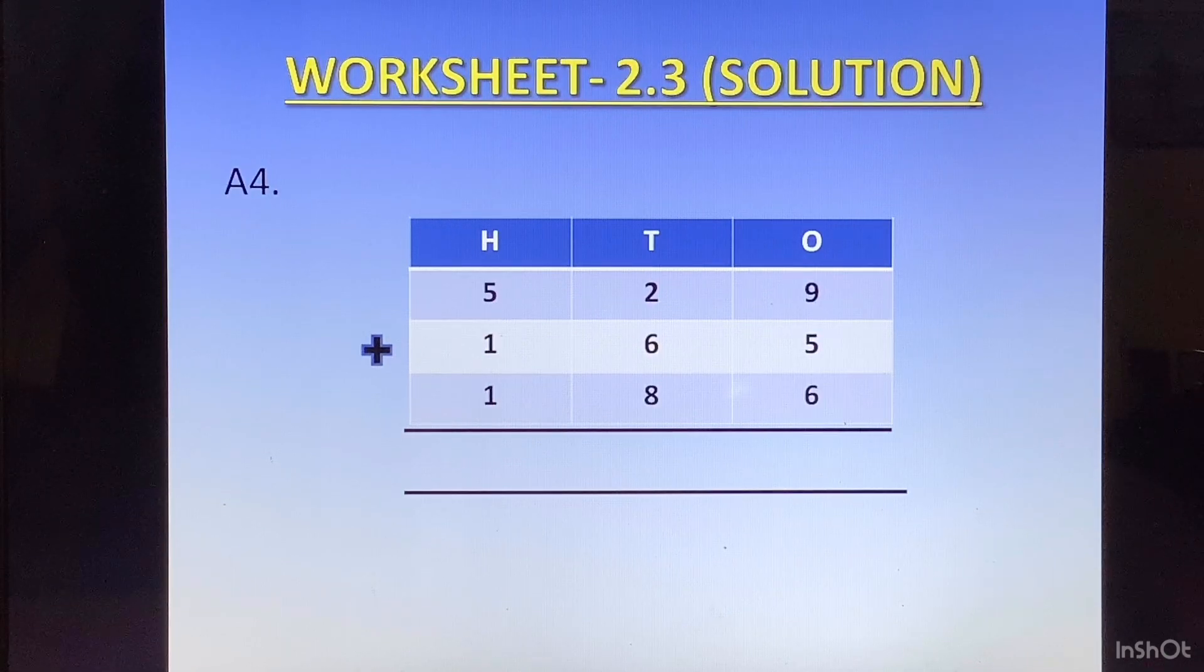Question 4. 529 plus 165 plus 186. We will start with the ones column. 9 plus 5 is 14, plus 6 is 20. 2 will go at the top of tens column as carry and 0 will come at the bottom of ones column.